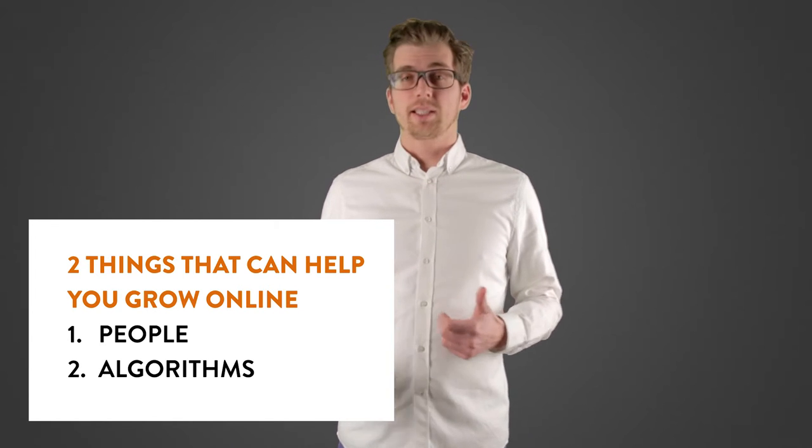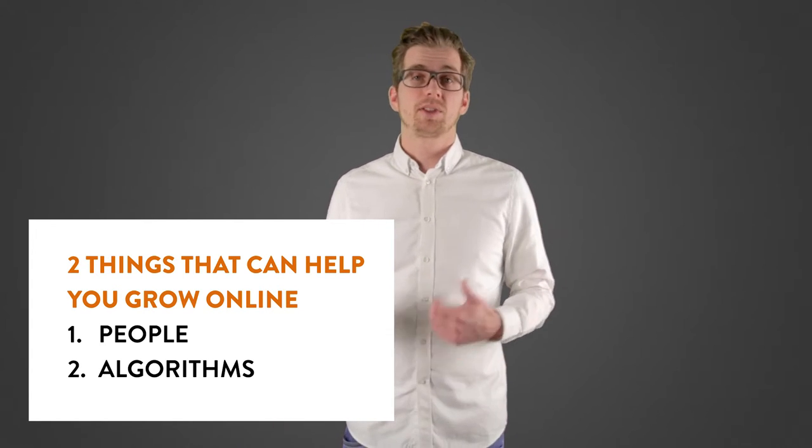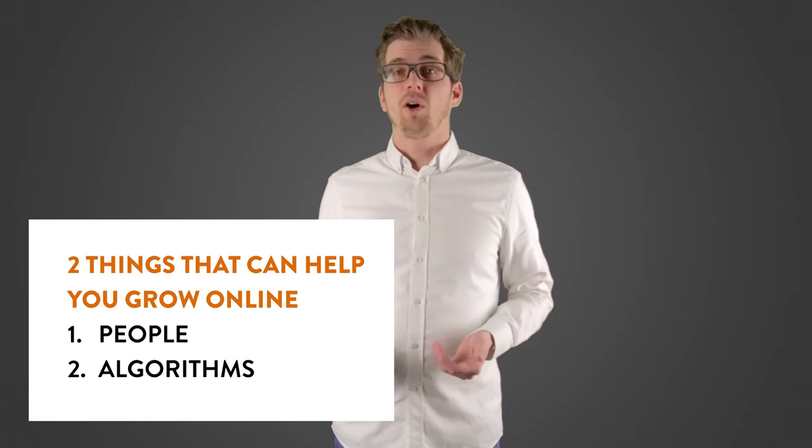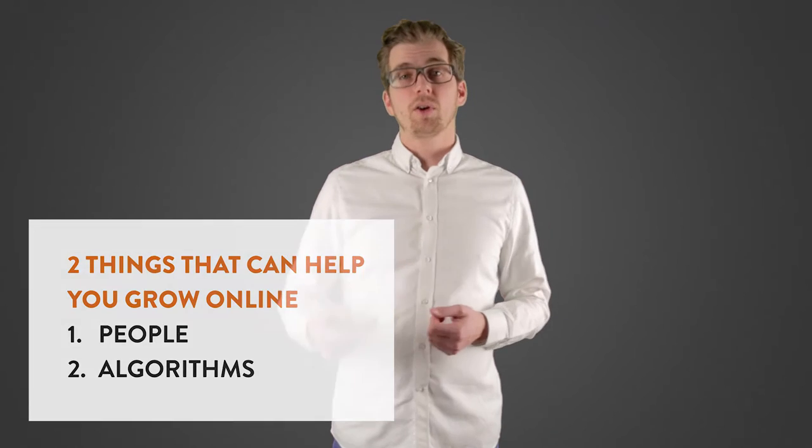The reason as to why this has occurred is essentially because there is simply too much information out there for you to see it all at once. So when you go to Google and you search for something, they've created an algorithm that goes through all the information online and then tries to deliver to you the stuff that you like the most or the stuff that you would like to see.